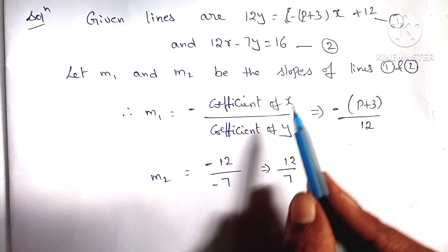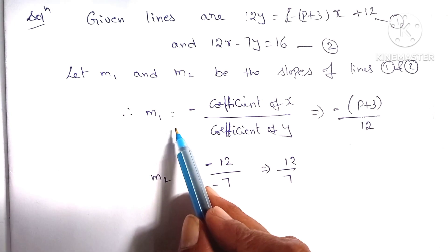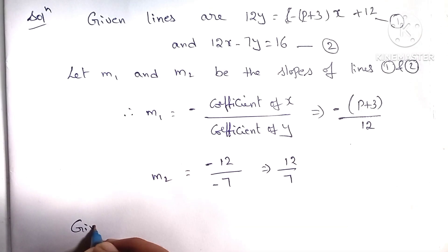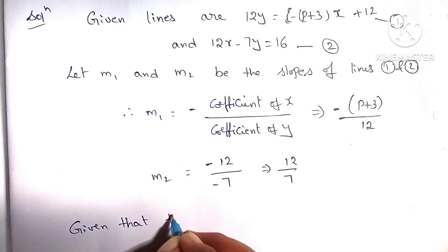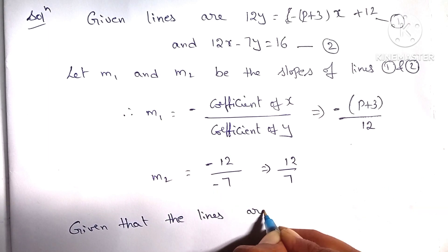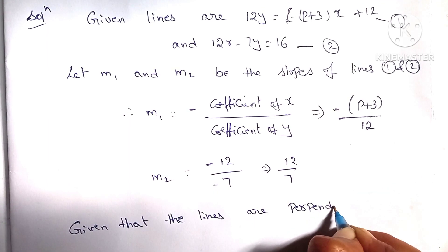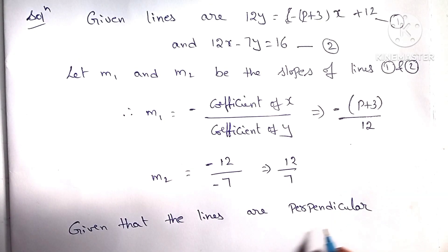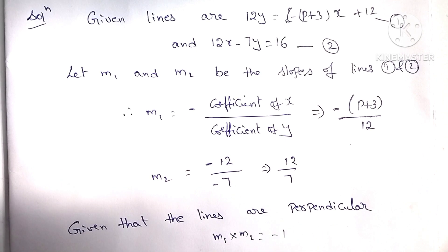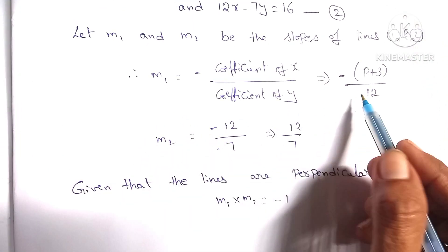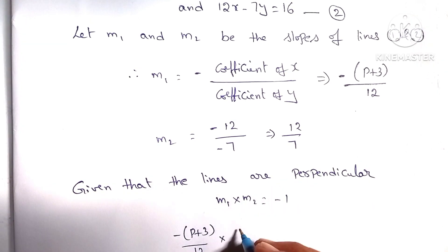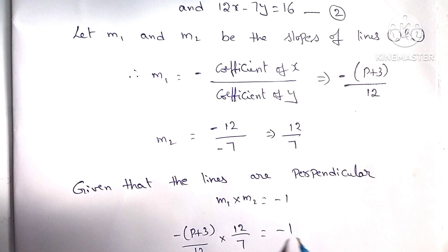Given that the two straight lines are perpendicular, perpendicular means the product of slopes is minus 1. So m1 into m2 equal to minus 1. Here m1 is minus of p plus 3 by 12, so minus of p plus 3 by 12 into m2 which is 12 by 7 equals minus 1.